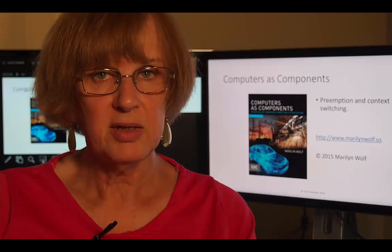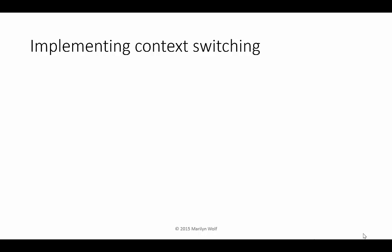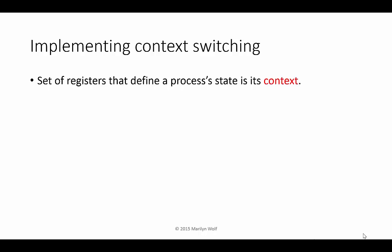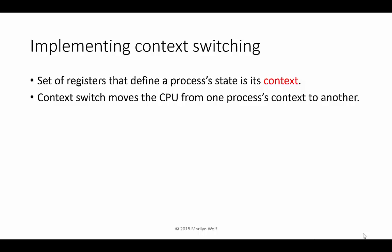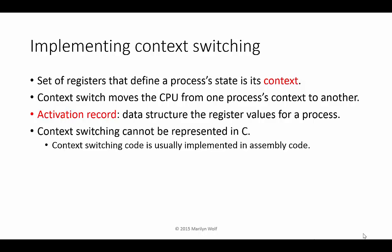Now let's look at how we can implement context switching. We can't do it in C — we have to use assembly language. The values of all the registers in the CPU are critical to maintaining the correct operation of a program. We call the set of registers and their current values the context of a process. A context switch changes the values of the registers from one process's values to another process's values. The activation record is the data structure we use to remember the register values, or context, for a process.